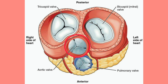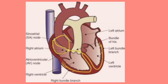The heart has three components in its conducting system: the sinoatrial node (SA node), the atrioventricular node (AV node), and the bundle of His, also known as the Purkinje fibers. The SA node is the pacemaker of the heart and is located near the superior vena cava. The AV node relays impulses from the atria to the ventricles, and the bundle of His distributes impulses to the ventricles, coordinating their contraction.